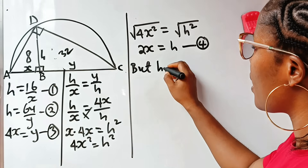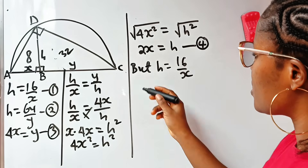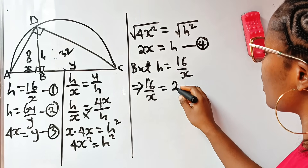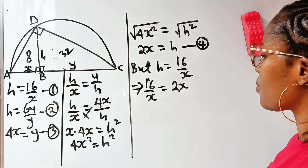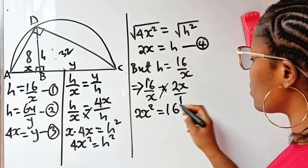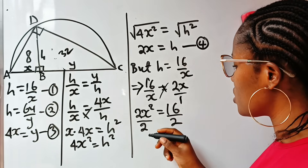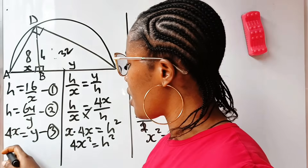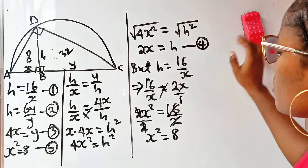According to equation 1, H equals 16 over X. Since both equal H, 16 over X equals 2X. Cross-multiplying gives 2X squared equals 16. Dividing both sides by 2 gives X squared equals 8. This is equation 5, and it's very important.